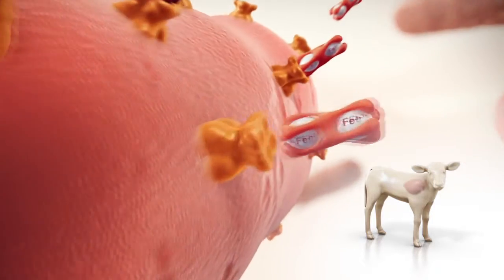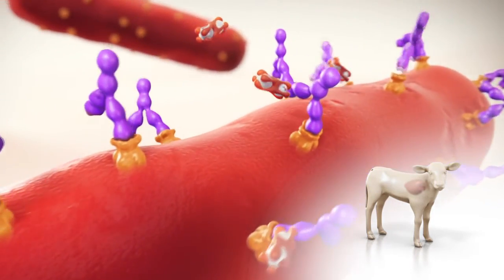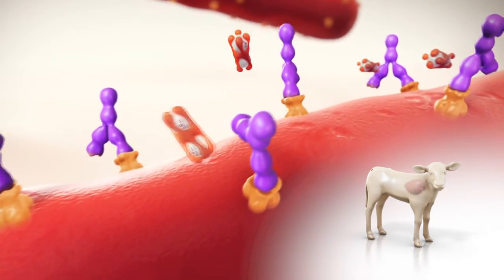If an infection with Mannheimia hemolytica occurs, these antibodies bind to the IRPs on the surface of the bacteria, limiting their replication.